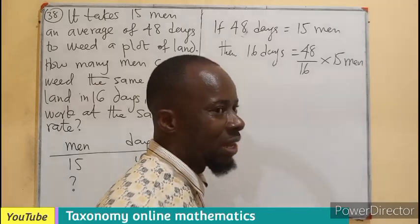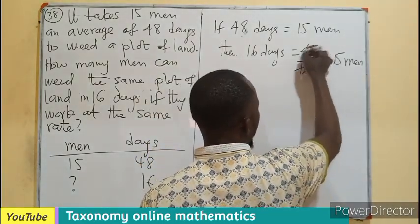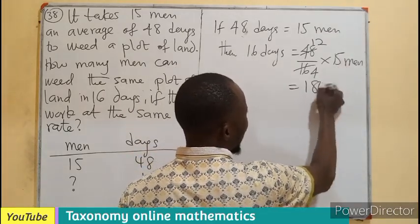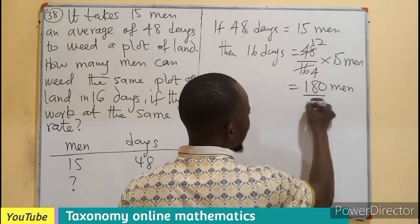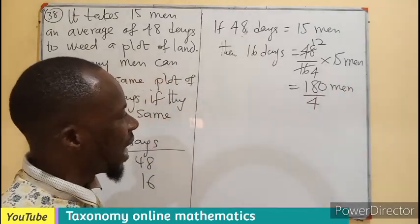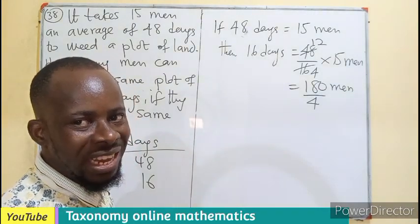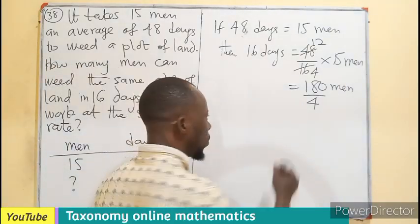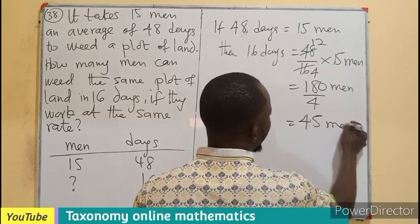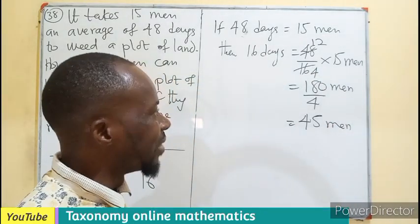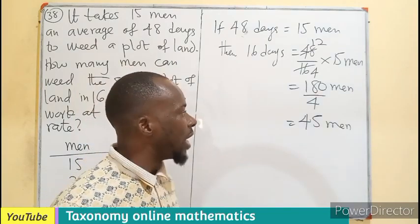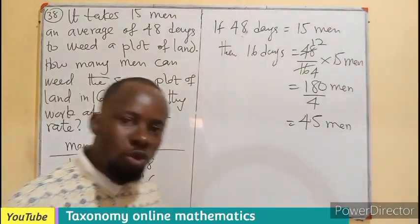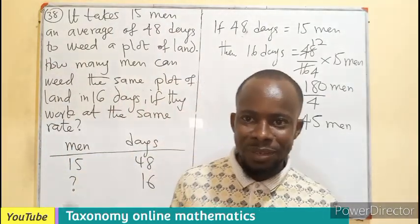In this case, our common factor is going to be 4. So 4 here, 4, 4 here, 12. Then if you multiply 12 by 15, I guess you get 180 men divided by 4. 2 will go into 180, 90 times. 2 will go into 4, 2 times. 90 divided by 2 will give you 45 men. You can use calculator or cancellation to get your answer. So this is going to be the number of men that will be able to work at the same rate using 16 days. I believe the concept of this is clear.